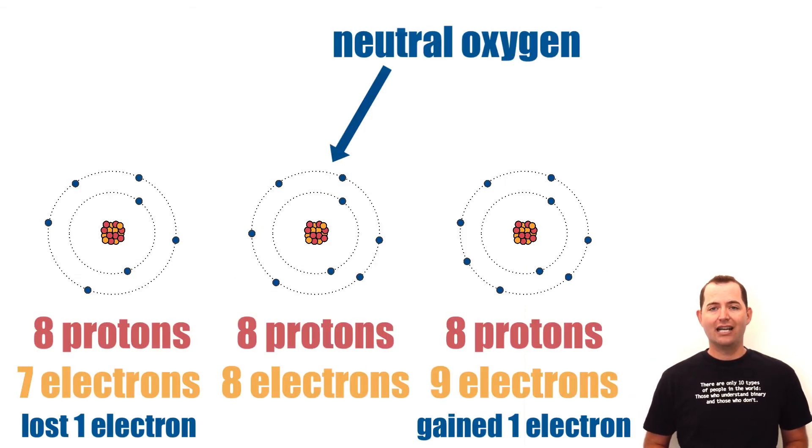For example, if neutral oxygen has eight protons in its nucleus and eight electrons in its electron shells, it will have a neutral or zero charge.